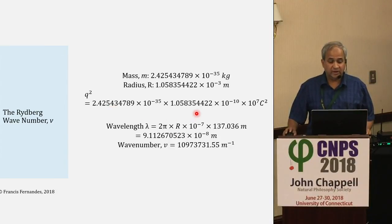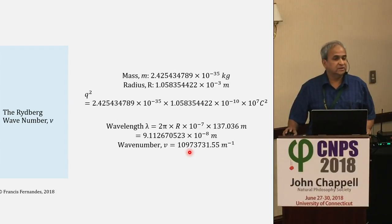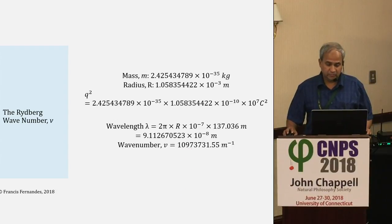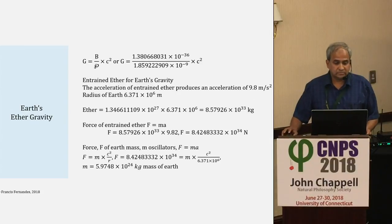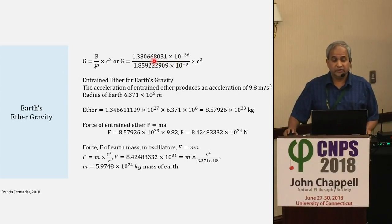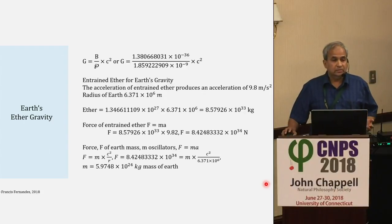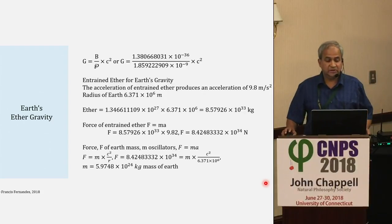Back to Newton's gravity: put in the radius of ether, the mass of ether, and C squared, and you get G. I want to show how ether contributes to Earth's gravity. If 1.34 times 10 to the power 27 kilograms of ether occupies one radial meter, by ratio and proportion, the ether contained in the radius of the Earth — 6.371 times 10 to the power 6 meters — turns out to be 8.57 times 10 to the power 33 kilograms.